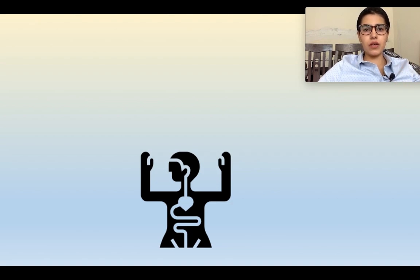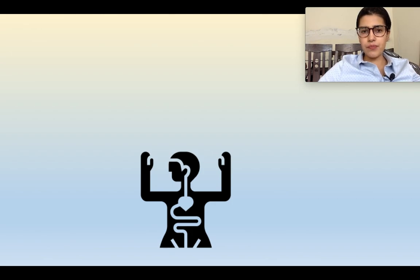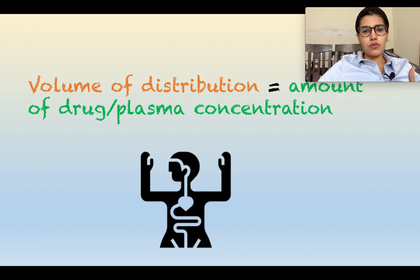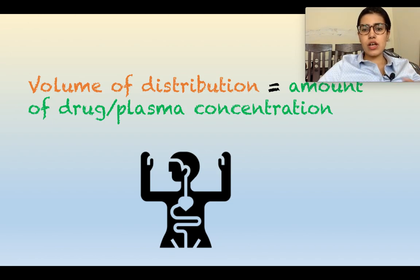The amount of drug that gets distributed into the various tissues is known as volume of distribution. In simpler language, if we want to compute volume of distribution numerically, it is the amount of drug given to the patient divided by the plasma concentration achieved in that patient after giving the drug.